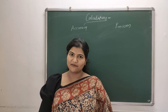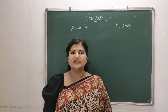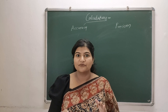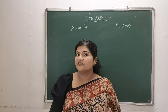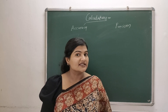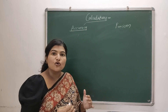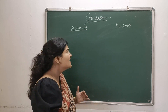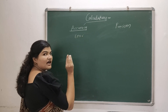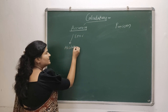Hello everyone and welcome back to B Pharma Wise. In today's video we are going to discuss the calculations for accuracy and precision. I have already covered the basics of accuracy and precision in a previous video — I will link that in the description. Today we will only focus on the calculation part. Accuracy means how close your result is to the actual or true value, and accuracy is expressed in terms of errors. Errors are of two types: absolute error and relative error.